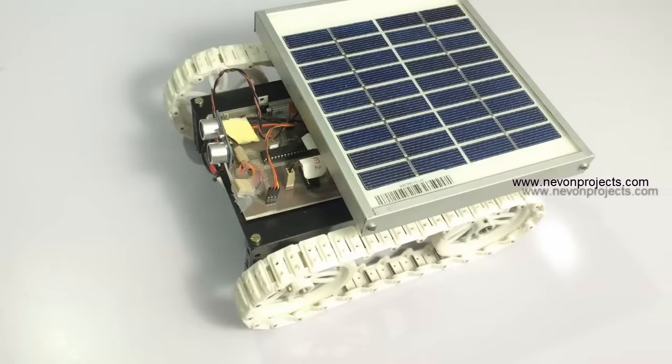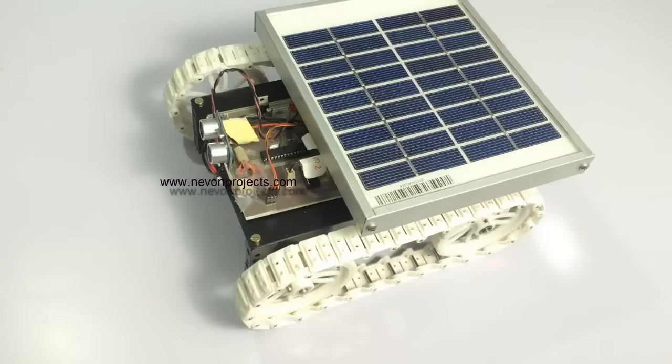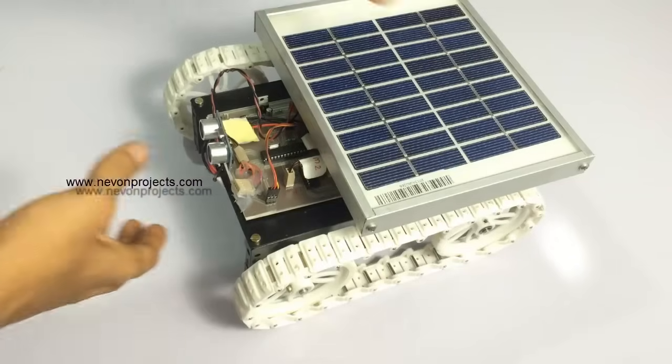In this way it covers the entire lawn by itself. And for this purpose we have used a microcontroller-based circuit here which is attached to the ultrasonic sensor. The motors are powered by the battery and this is the grass cutter motor below it.